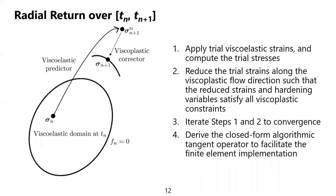We use radial return for time integration. Suppose that we are in the viscoplastic domain at T_n. We in turn apply trial viscoelastic strains and compute the trial stresses, then reduce the trial stress along the viscoplastic flow direction, such that the reduced stress and hardening variables satisfy all viscoplastic constraints. We iterate steps 1 and 2 to convergence, and derive the closed-form algorithmic tangent operator to facilitate the finite element implementation.